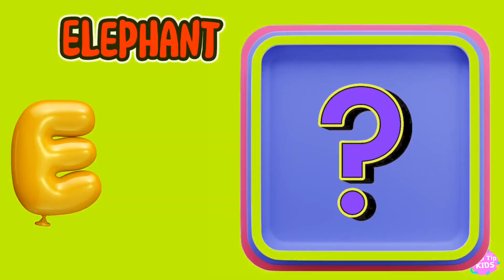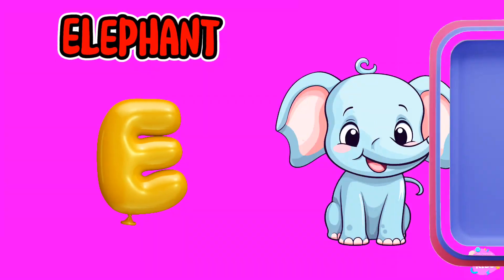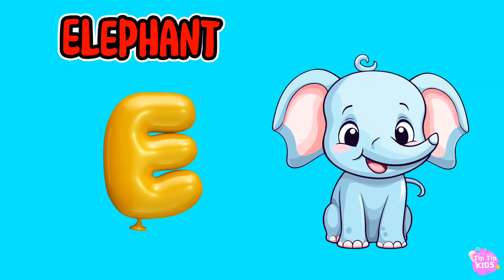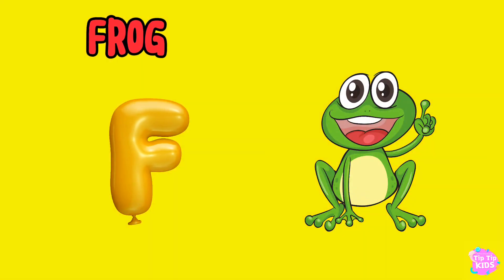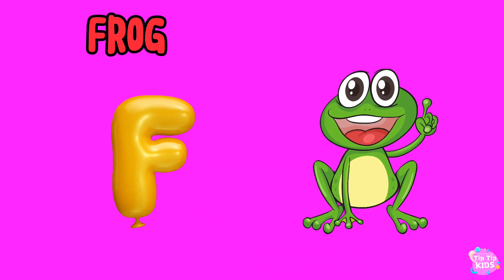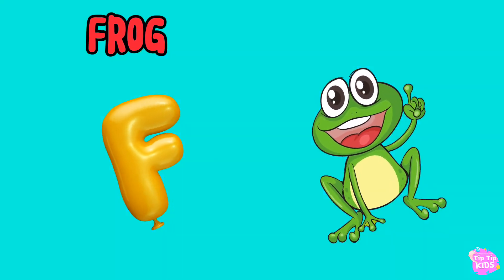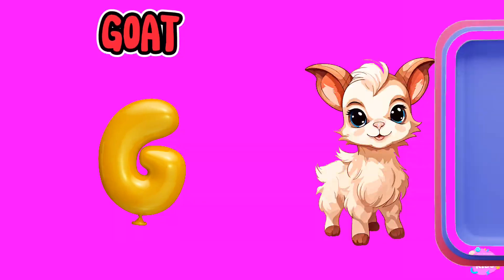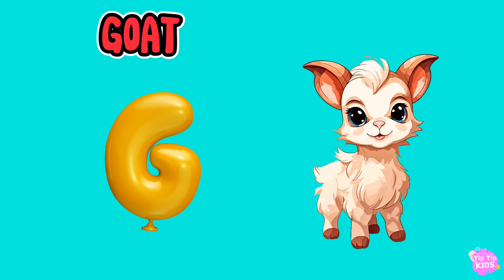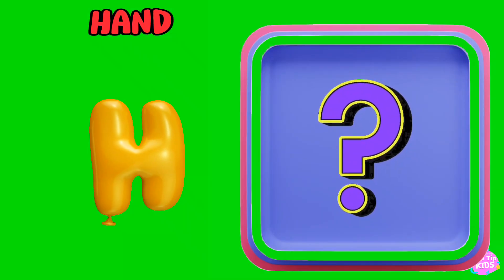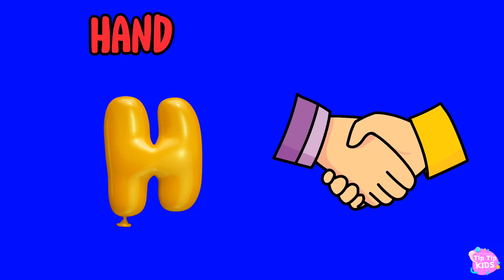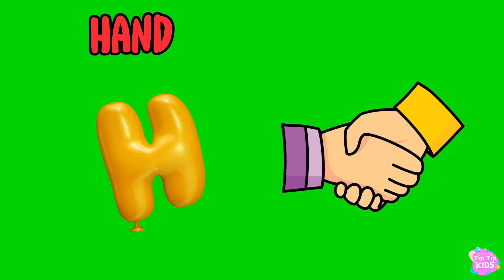E is for elephant, e-e-elephant. F is for frog, f-f-frog. G is for goat, g-g-goat. H is for hand, a-a-hand.